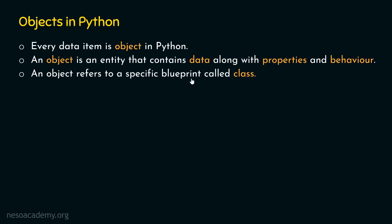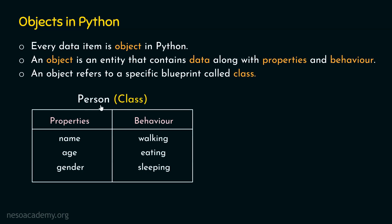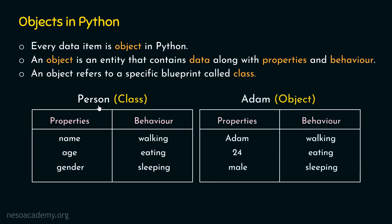Also, an object refers to a specific blueprint called a class. A class is a blueprint which every object of that class needs to follow — just a structure given to an object. For example, we can create a person class, a generic class which has properties like name, age, gender and behavior like walking, eating, sleeping. This is the class — just a blueprint, not the exact values. But if we create an Adam object of this class, we assign values to these properties: Adam, 24, male. So the object consists of real values. We now know the difference between an object and a class.